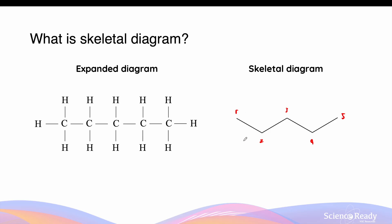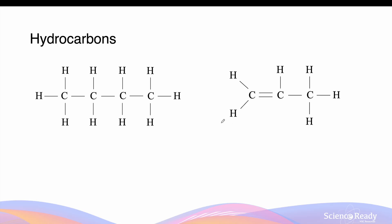So let's draw the skeletal diagrams of these expanded diagram forms of organic substances. For this first hydrocarbon, we see that there are 4 carbons and 10 hydrogens. First we begin by drawing our carbon backbone, so there are 1, 2, 3, 4 carbons. Because all other bonds are carbon-hydrogen bonds, we do not need to draw them in here, as not indicating them assumes that they are already included.